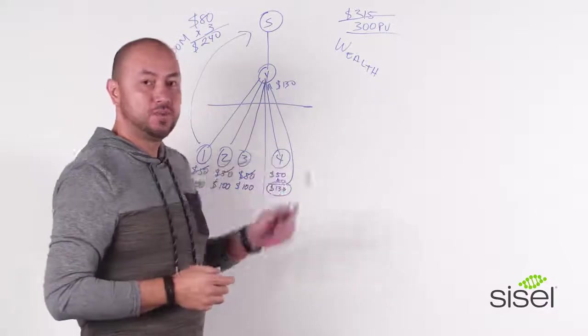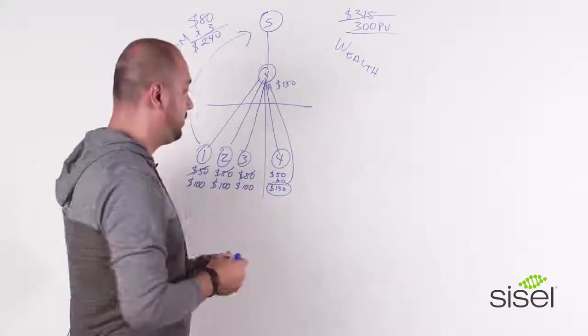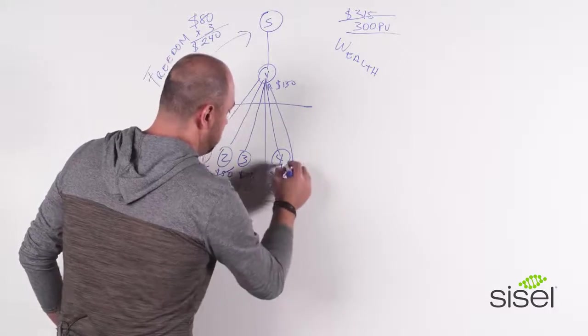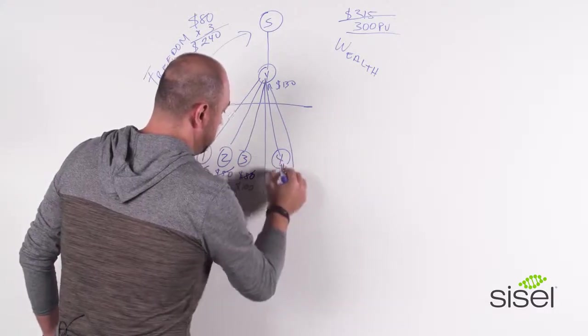Let's do an example and see what happens when you sign up number four and when your number four starts duplicating. Same thing. They're going to do their three.